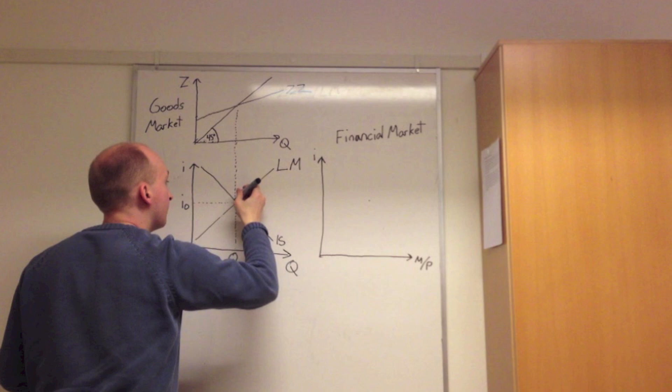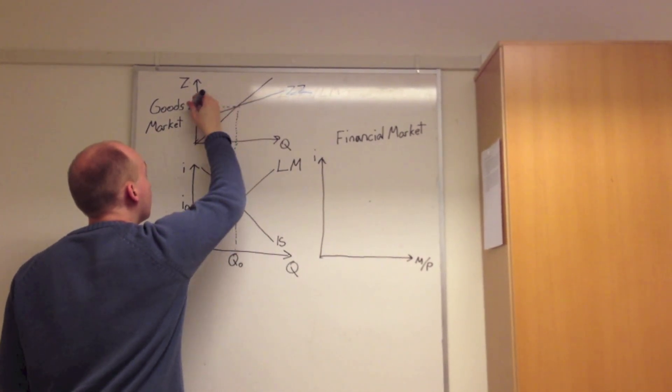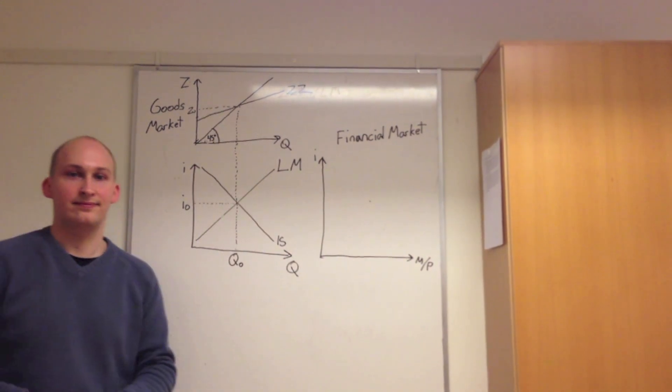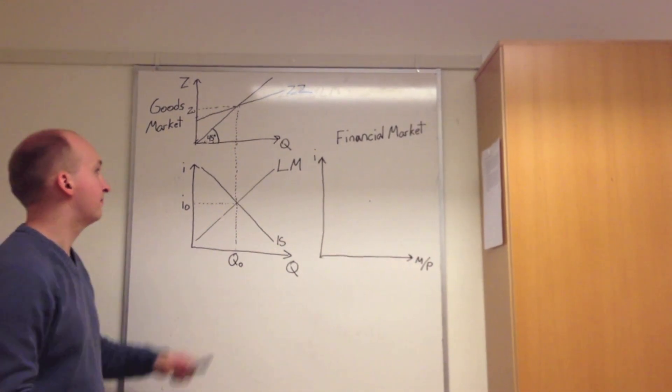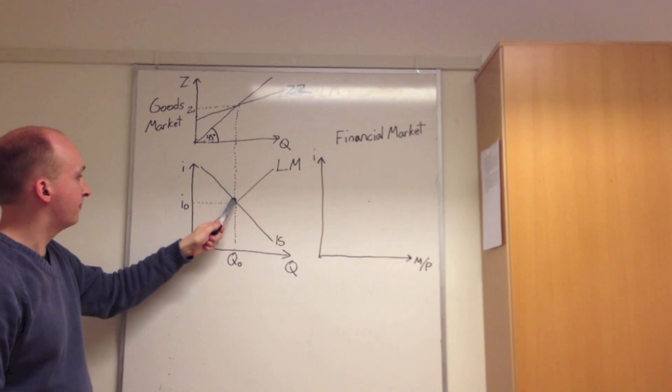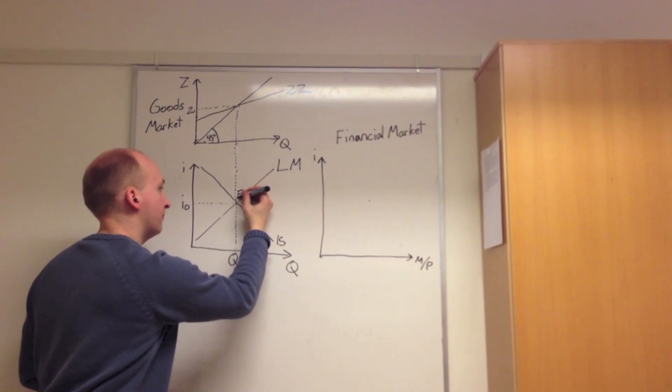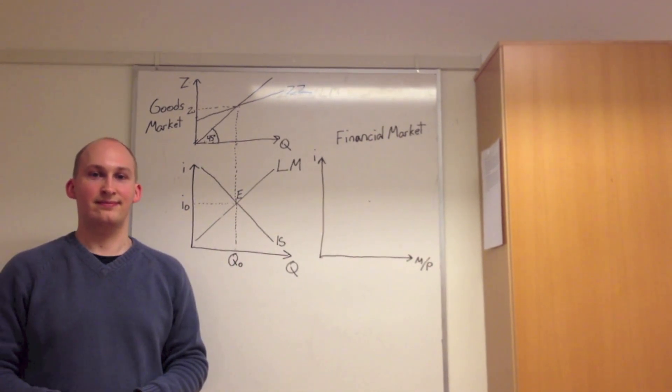This intersection must then equal the equilibrium value for the IS and of course denoted by the initial value Q0. As you can see, the intersection of this curve gives us our total equilibrium for the goods market, where of course we denote the equilibrium value by E.